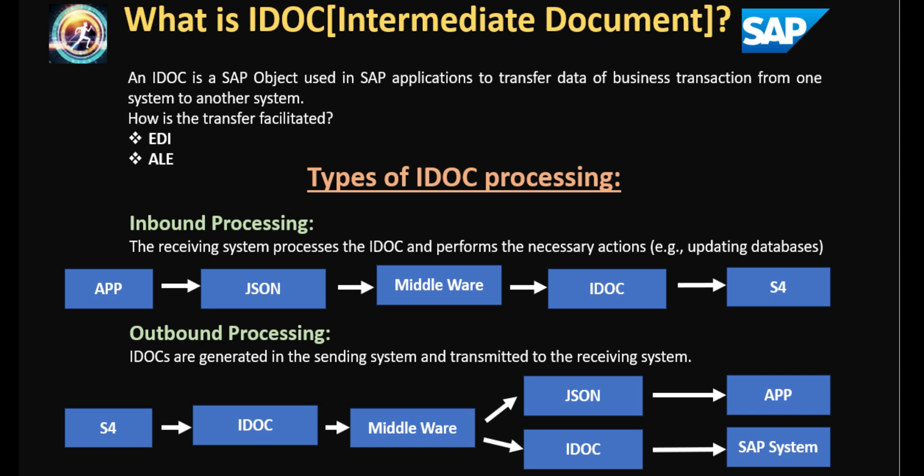What are the different types of data transfer movement? There are two types: inbound processing and outbound processing. Inbound processing is when a third party application transfers data to an S4 system. If the S4 system sends data to a third party system, we call it outbound processing. Let's get into the details of how data movement happens from a third party system to an S4 system in inbound processing.